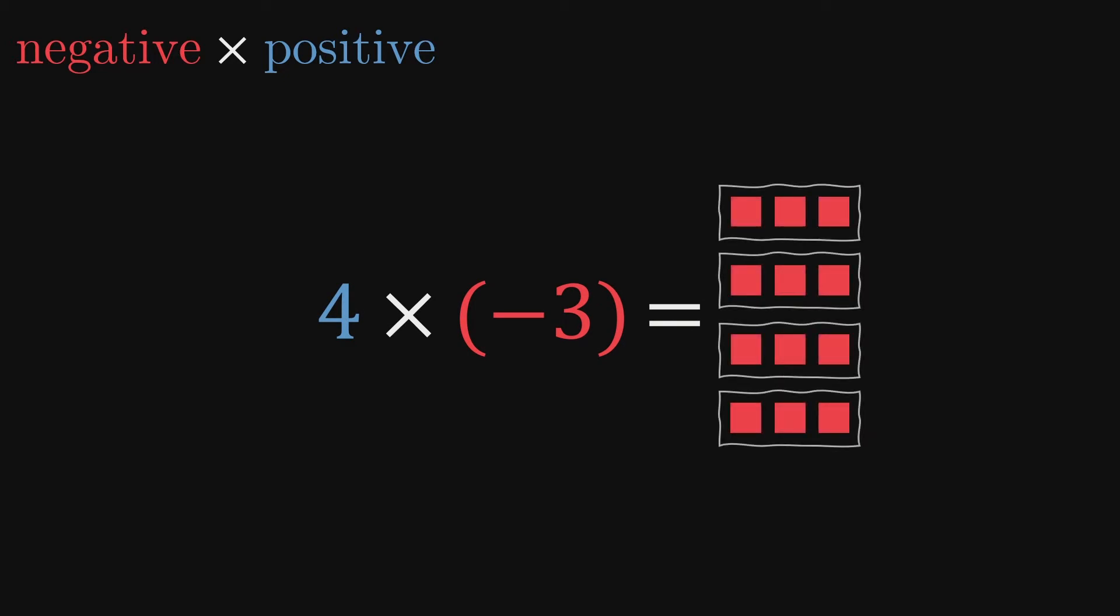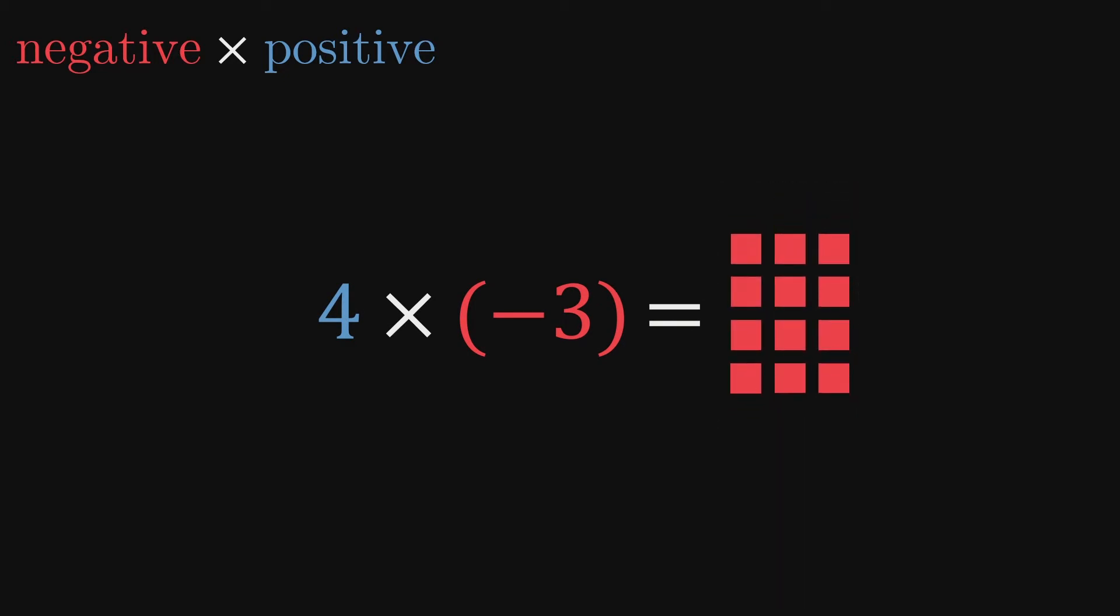What about a negative multiplied by a positive, such as negative 3 times positive 4? Thankfully, we don't need to think of this example as negative 3 groups of 4. As we've seen, we can just use the more easily interpreted 4 times negative 3 version, which corresponds to 4 groups of negative 3, resulting in negative 12.